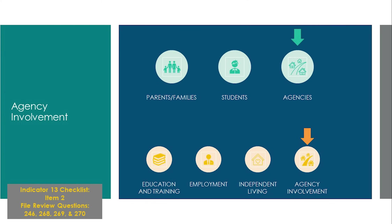To wrap up, here is an example of a sample agency statement: 'Bob and his family were provided with information regarding the supports provided through the Allegheny River Intellectual Disability Services and the Office of Vocational Rehabilitation. Bob met with a supports coordinator from ARID on May 3, 2019, and now has a current open case. Bob is scheduled for an intake with an OVR representative during the fall of 2017. Both OVR and ARID representatives were invited to his current IEP meeting.'